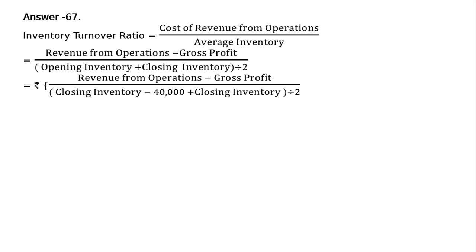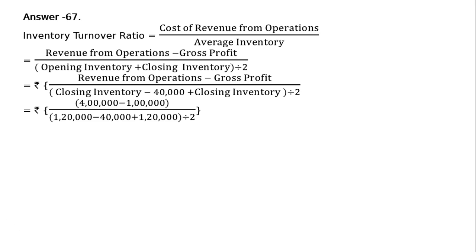Substituting the values: Rs. 4 lakhs minus Rs. 1 lakh, whole divided by — the value of closing inventory is Rs. 1 lakh 20,000, and this is more than the opening inventory by Rs. 40,000. Hence opening inventory is Rs. 80,000. So Rs. 80,000 plus Rs. 1 lakh 20,000, whole divided by 2. That is equal to Rs. 3 lakhs divided by Rs. 1 lakh, which equals 3 times. This is the final answer.